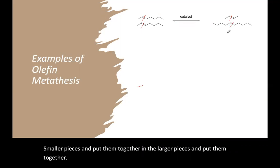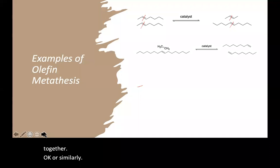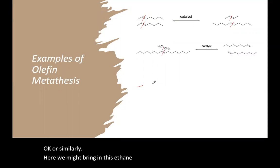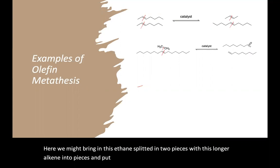Or similarly, here we might bring in this ethene, split it in two pieces, split this longer alkene in two pieces, and put those pieces back together a different way. That's olefin metathesis.